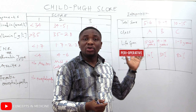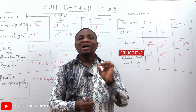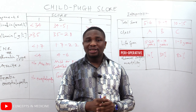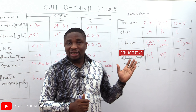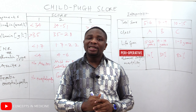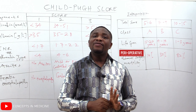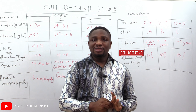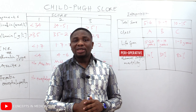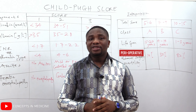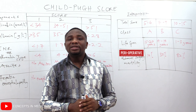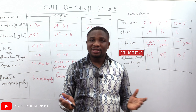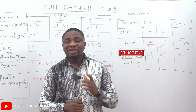The final component is hepatic encephalopathy, which we discussed in a previous lesson. If there is no hepatic encephalopathy, a score of one. Hepatic encephalopathy of grades one to two gives a score of two. Grades three to four gives a score of three.